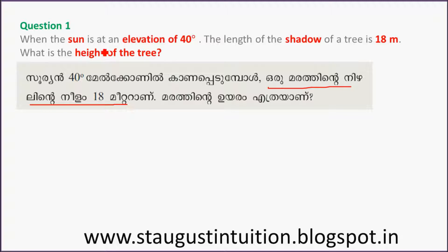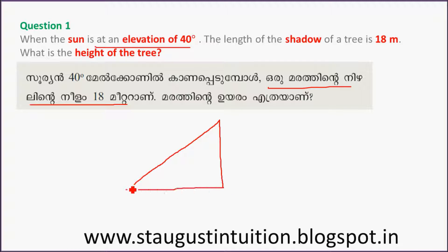The sun is at an elevation of 40 degrees. In the right angle diagram, the sun is here, and this is the tree.